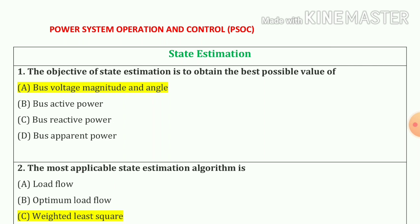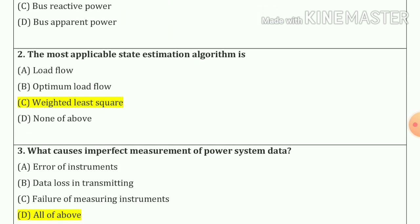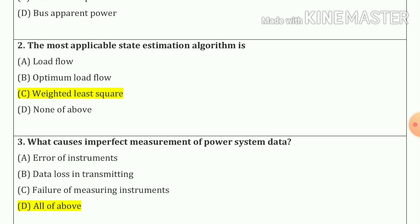The objective of state estimation is to obtain the best possible value of bus voltage magnitude and angle. Option number a. Question number 2: The most applicable state estimation algorithm is option number c, weighted least square, which is our correct answer.